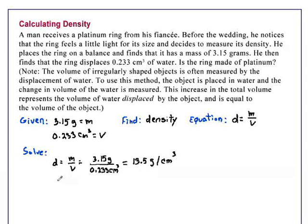Now, the problem is that if we look up the density of platinum, we find that the density of platinum is 21.4 grams per cubic centimeter. So this ring cannot possibly be made of platinum.